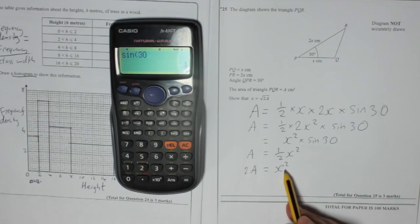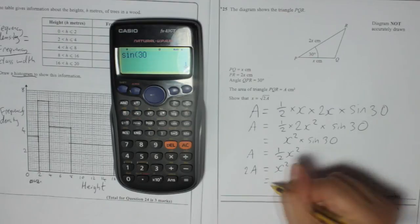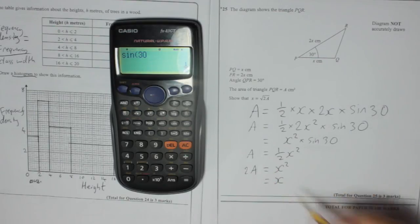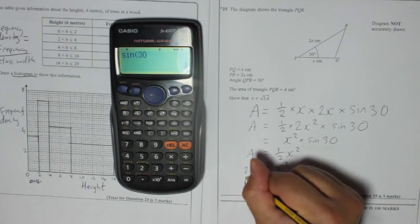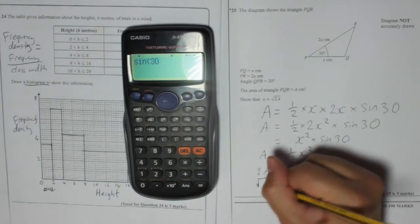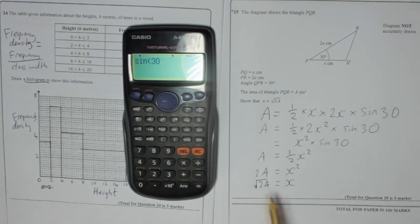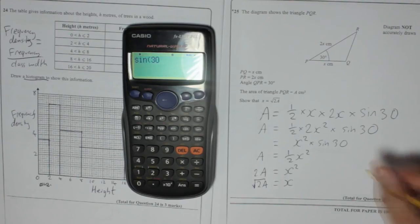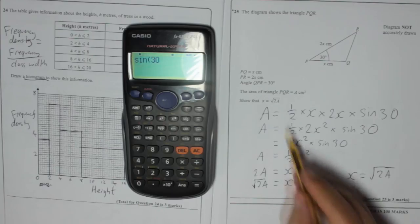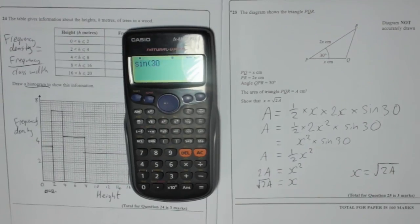Is equal to x squared. How do you undo an x squared? You square root. So that would be square root of 2a is equal to x. X is equal to the square root of 2a. Just like it said at the start. And that's the end of the test.